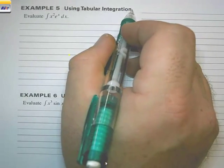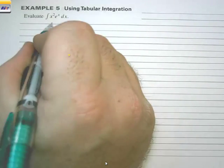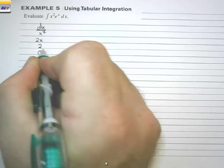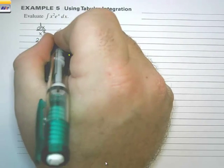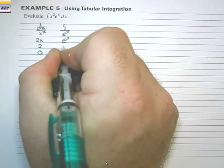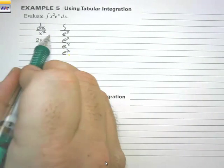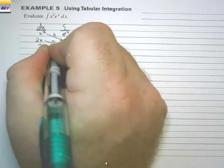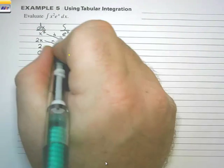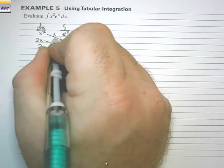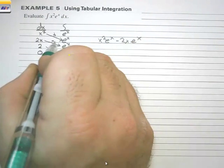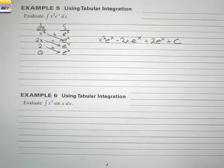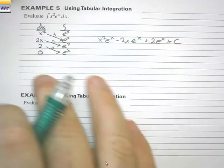Tabular integration. Instead of repeating integration by parts, we can use tabular form. For the derivative column, take x²: derivative is 2x, then 2, then 0. For the integral column, eˣ integrates repeatedly as eˣ, eˣ, eˣ. Draw diagonal arrows downward and alternate signs plus, minus, plus. The integral of x²·eˣ is x²·eˣ minus 2x·eˣ plus 2eˣ plus C. Tabular works as long as one function eventually reaches zero after repeated differentiation.